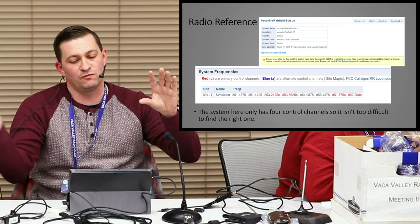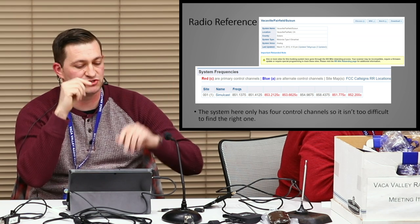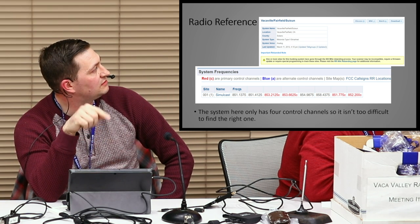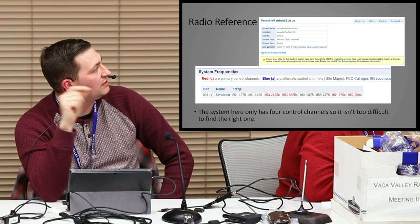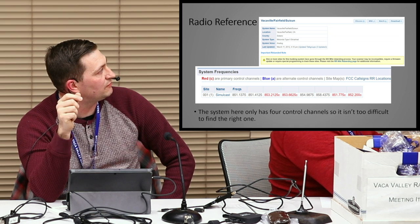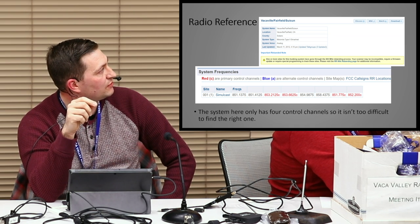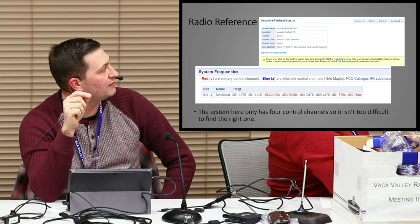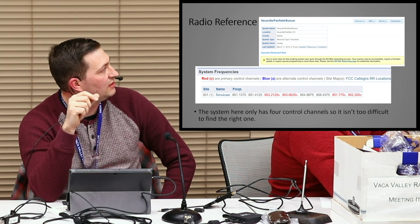What the control channel does is tell the system which frequencies you're going to hop around on. With this system locally, it seems to jump around quite often — around midnight it jumps to a different one. If you have a traditional scanner without control channel tracking, you'll just hear a garbled mess of data. But with this software, I believe it will find the next control channel automatically, same as an expensive scanner would.